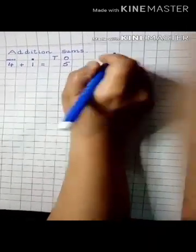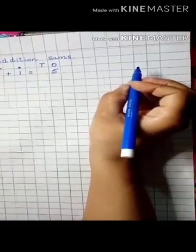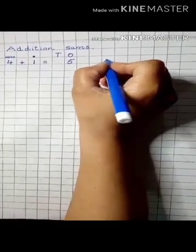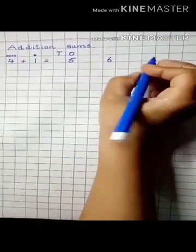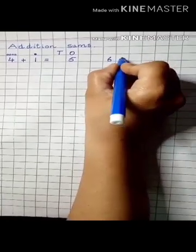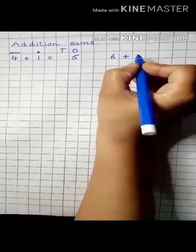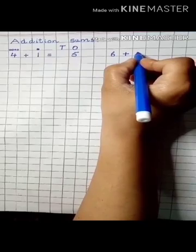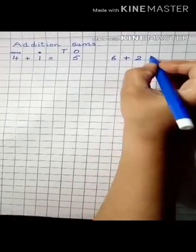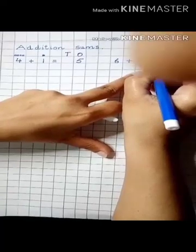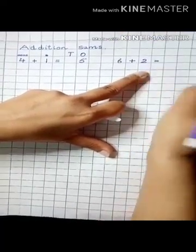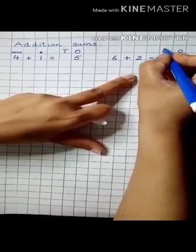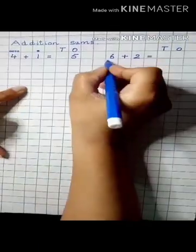Leave 2 blocks and we will write another sum: 6 plus 2 is equal to. It is called addition or plus sign. Don't write on the line, and don't forget to write 1s and 10s on the top.